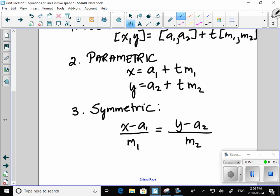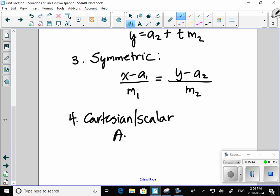And lastly, we still refer to Cartesian slash scalar slash general form as ax plus by plus c equals 0. Which comes right from grade 9. But it's very interesting that for a line in this form, the direction vector is actually negative b comma a. And the normal is ab. And we'll get into that a little bit more. Let's do an example together.